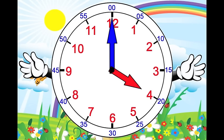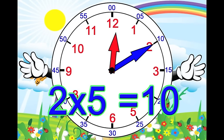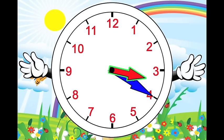You can multiply the hour by 5 to find out how many minutes there are. This clock says 12:10. Let's look at another one. First look at the hour hand — we're still talking about the 3. Then look at the minute hand: 20 minutes have passed. Count by 5s: 5, 10, 15, 20. So it's 3:20.